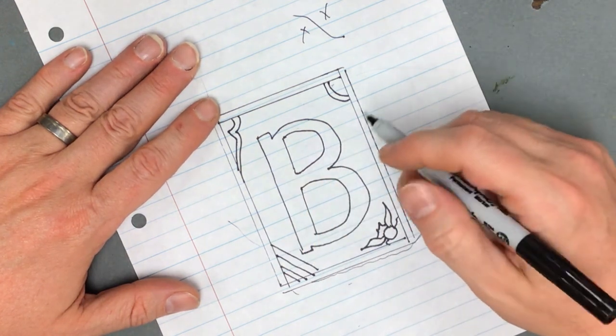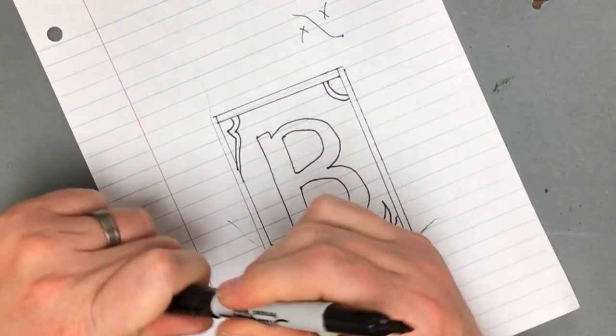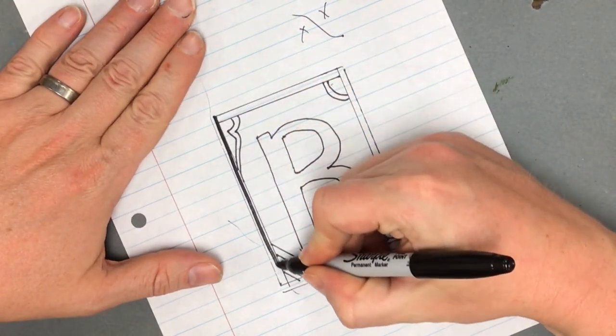Next, I'm going to go over with a larger marker and I want to color everything in black that I want black ink. So that leaves this part here.